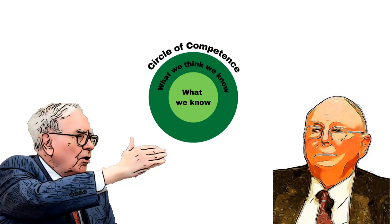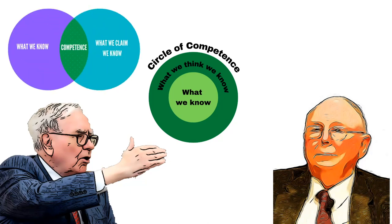Buffett and Munger used the model to describe limiting one's financial investments away from areas you have limited understanding or expertise and instead focusing on areas where you have the greatest familiarity or edge. Part of the model involves the importance of accurately assessing one's own abilities relative to what one may think they might know.